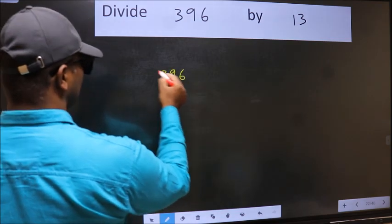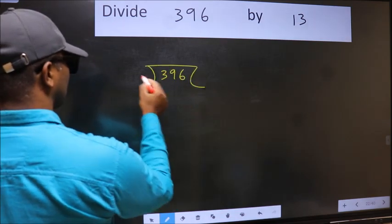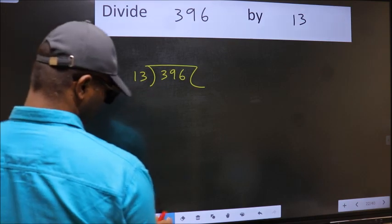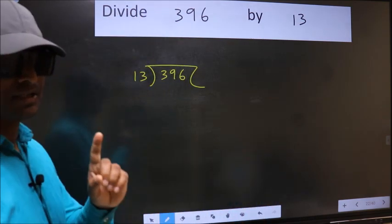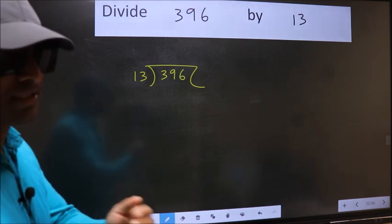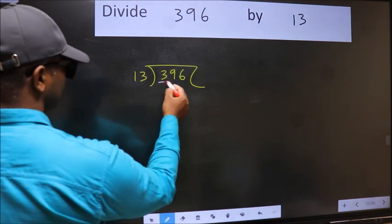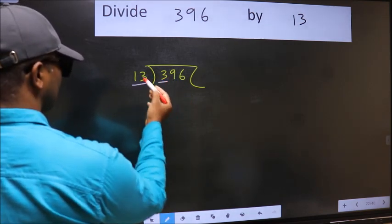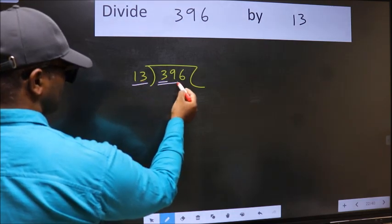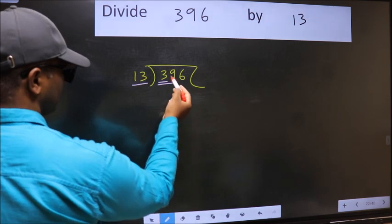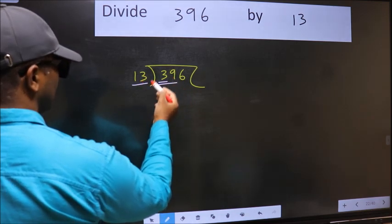396 and 13 here. This is your step 1. Next, here we have 3 and here 13. 3 is smaller than 13, so we should take two numbers, 39.